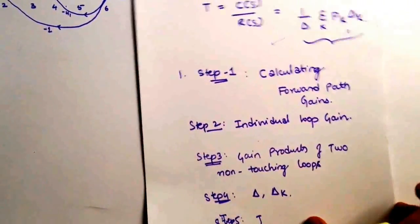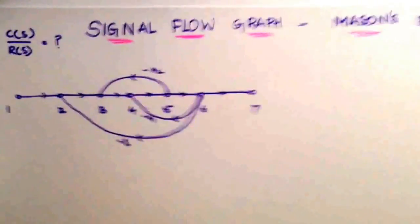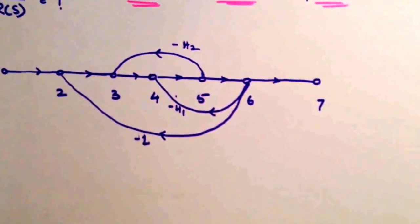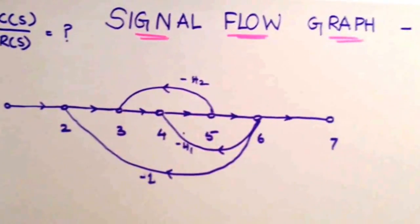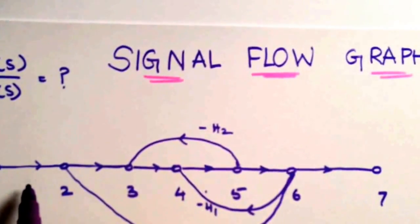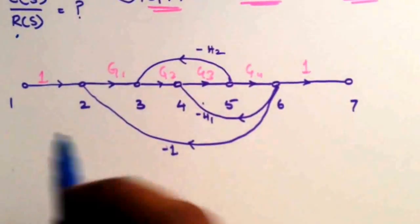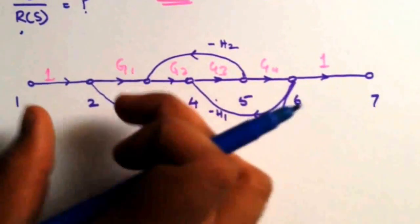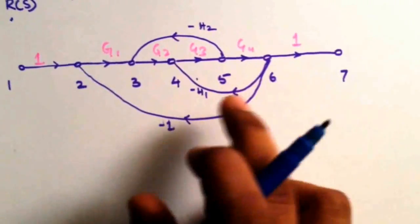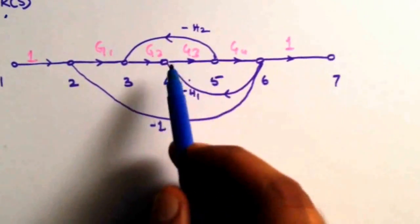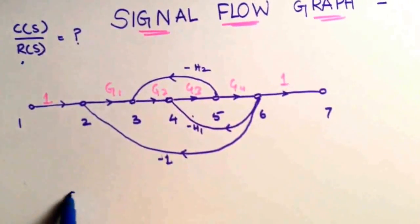Now let's get to the example. I have written the gains of each branch: 1, g1, g2, g3, g4, and 1, and the feedback branches have gains of minus h2, minus h1, and minus 1.